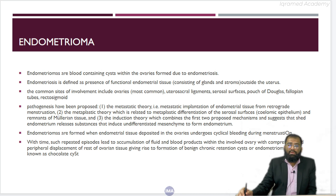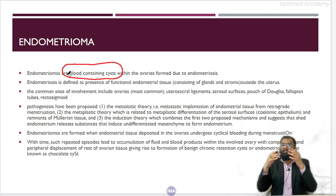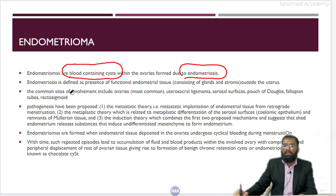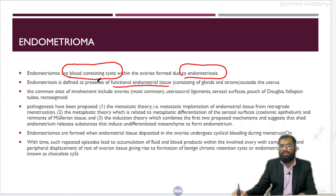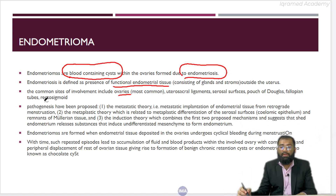Let us begin with endometrioma. Endometriomas are blood-containing cysts. Why are they blood-containing? Because they contain endometrium which keeps on shedding within the endometrial cysts, and within the ovaries they form, leading to formation of endometriosis. Endometriosis is defined as the ectopic presence of functional endometrial tissue — which is glandular tissue that responds to various hormonal changes in the body. Common sites include the ovary being one of the most common, leading to formation of chocolate cysts, as well as the uterosacral ligament, the serosal surface, pouch of Douglas, along the fallopian tube, and recto-sigmoid.